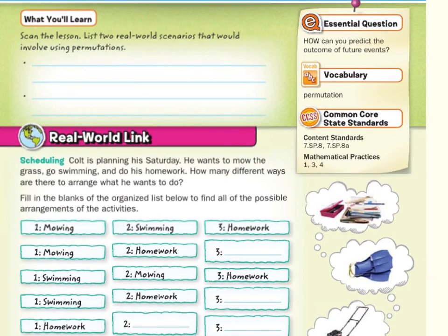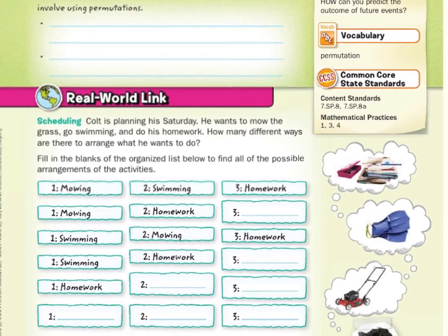Our real-world link: Colt is planning his Saturday. He wants to mow the grass, go swimming, and do his homework. How many different ways are there to arrange what he wants to do? Fill in the blanks of the organized list below to find all of the possible arrangements of the activities.